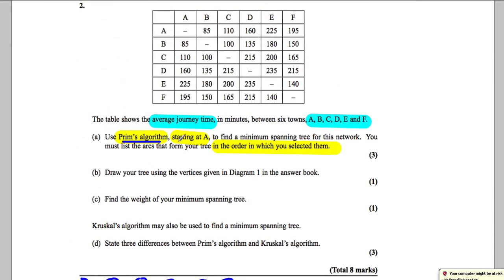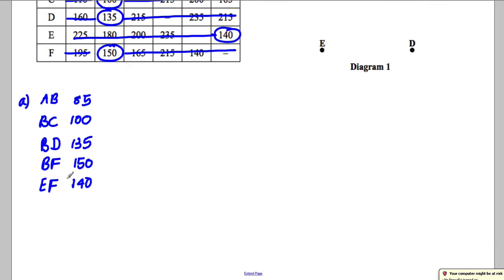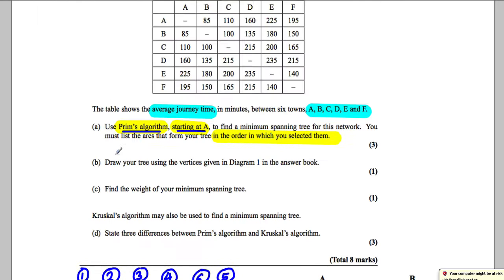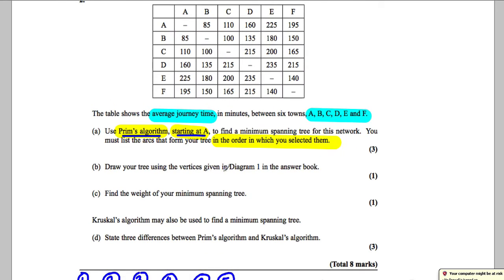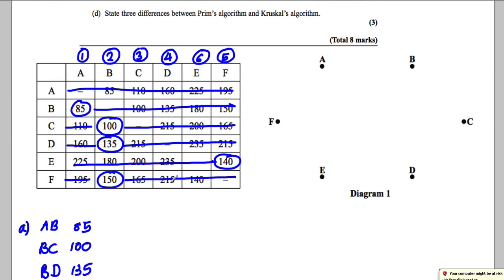Now it says use Prims starting at A to find the minimum spanning tree for this network. You must list the arcs in the order you selected them. So we found it and we've listed them in the order in which we found them. So that's a perfect answer at that point. It didn't ask us to state the minimum spanning tree as yet. Now for part B it says draw your tree given in diagram one in your answer book. So draw your tree. They want to draw this minimum spanning tree here. So we're going to do this in this diagram.